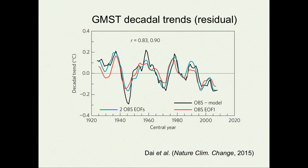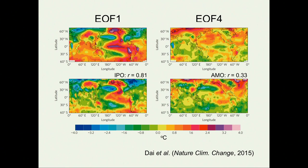And here are the EOFs. There probably won't be many surprises. The first EOF pattern is shown on the top, and it looks a lot like the IPO structure. That's confirmed in the panel below, where we've taken the canonical IPO index and regressed it against de-trended grids of observed surface temperature. There's a very close correspondence — the pattern correlation is 0.8, so a little over 60% of the variance is explained by the IPO, but not all of it.